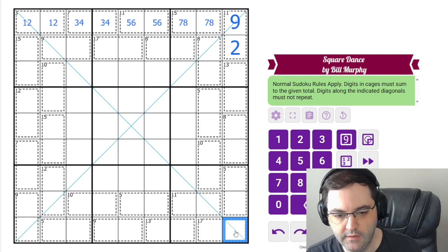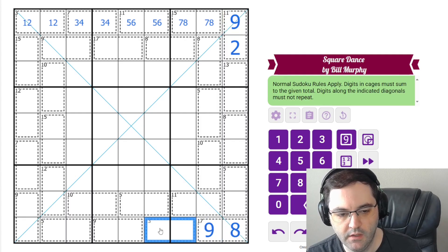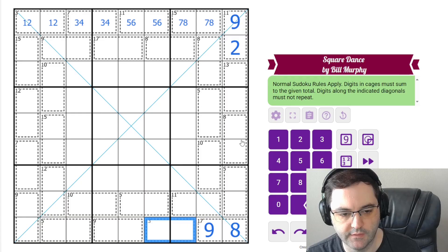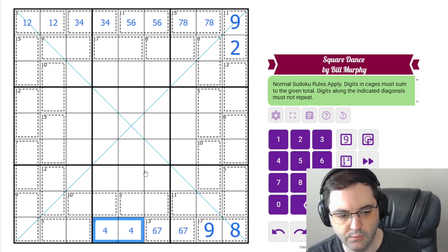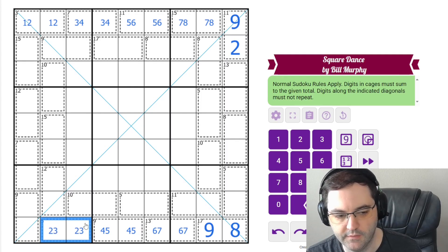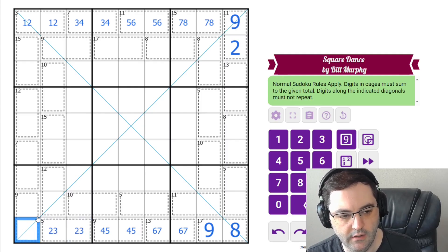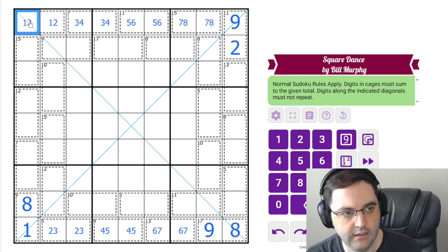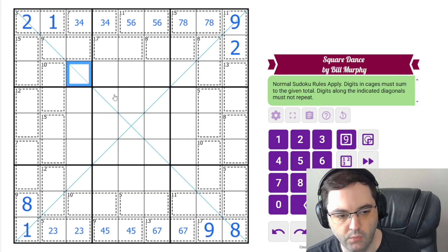Down here, 17 must be 8, 9. And then the highest this cage can be now is 6, 7, which is 13. The highest this can be is 4, 5, which is 9. The highest this can be is 2, 3. And that's going to leave a 1 and an 8 here. The 1 resolves our 2, 1 at the top.